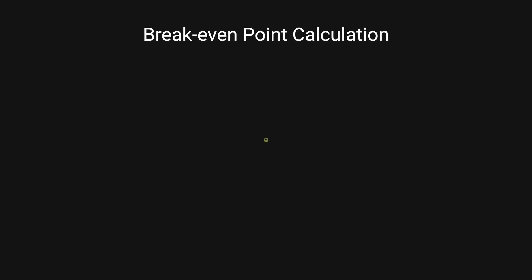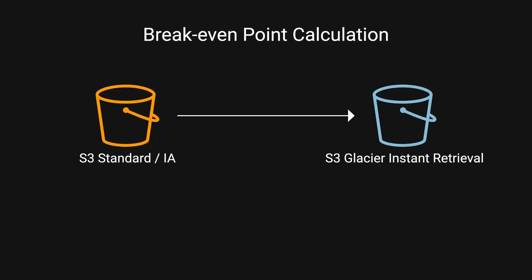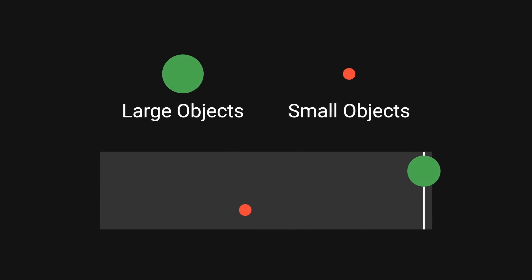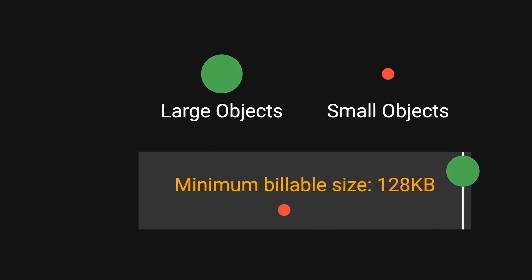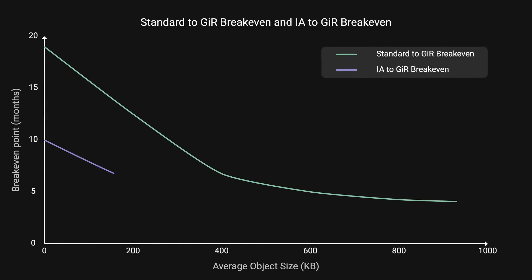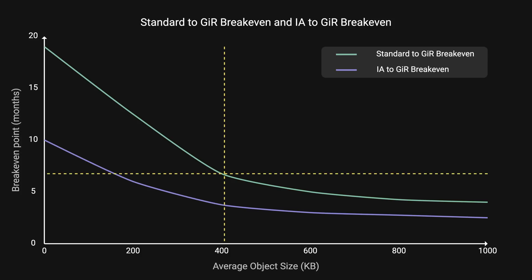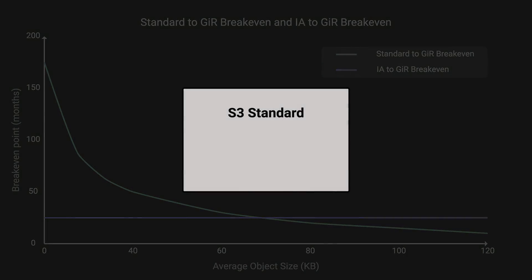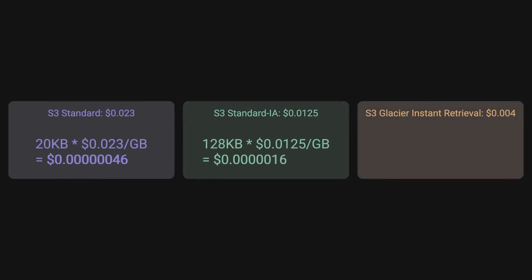They calculated the time it would take to break even when moving from S3 Standard or S3 Standard IA to S3 Glacier Instant Retrieval. This calculation considers the average object size in each bucket. Large objects tend to reach the break-even point faster, while small objects may take months to become cost-effective due to the minimum 128 kilobytes billable object size. Based on their analysis, they decided to prioritize transitioning objects with an average size of 400 kilobytes or larger to S3 Glacier Instant Retrieval, ensuring a positive return on investment within 6 months. They also found that objects around 20 kilobytes in size are more cost-effective to leave in S3 Standard, since S3 Standard has no minimum billable object size and the break-even point for small objects is too high.